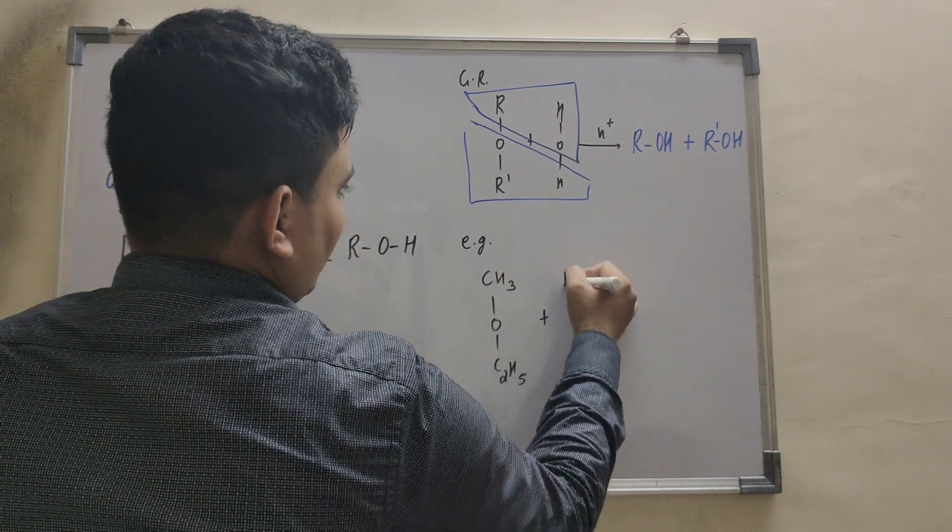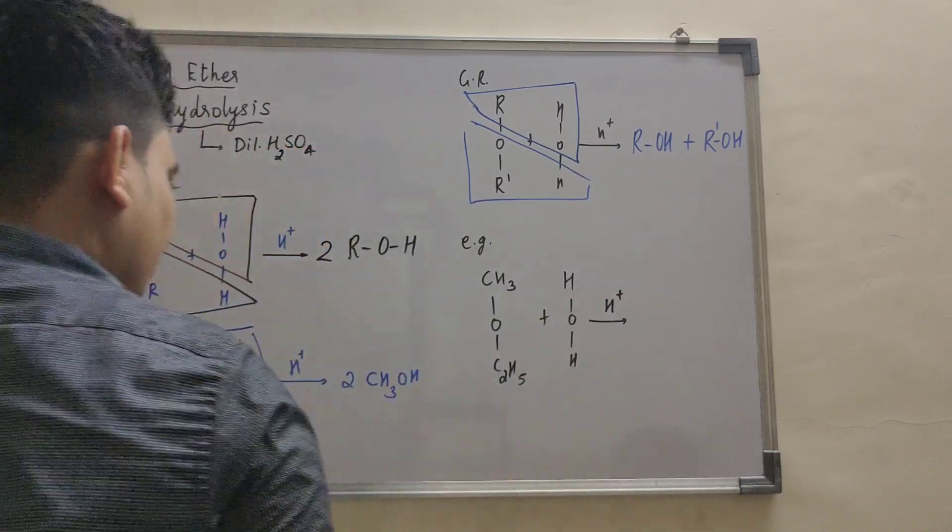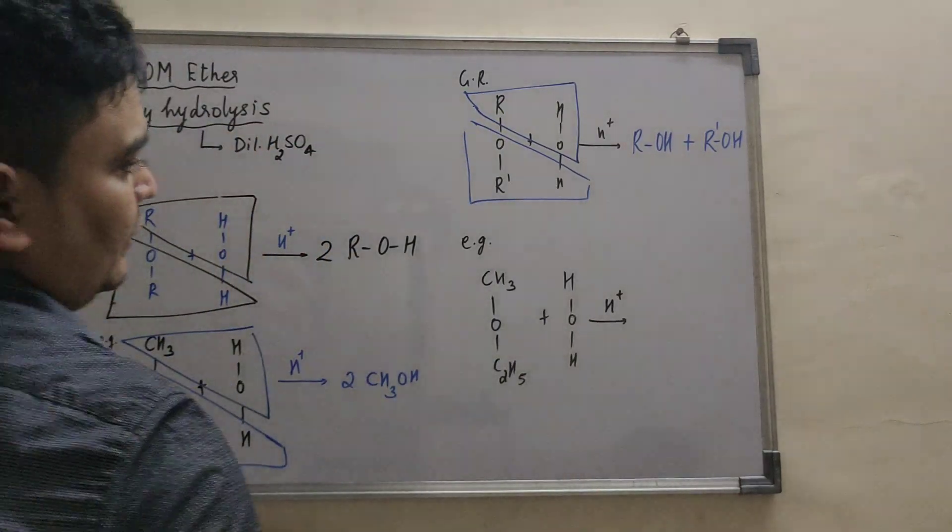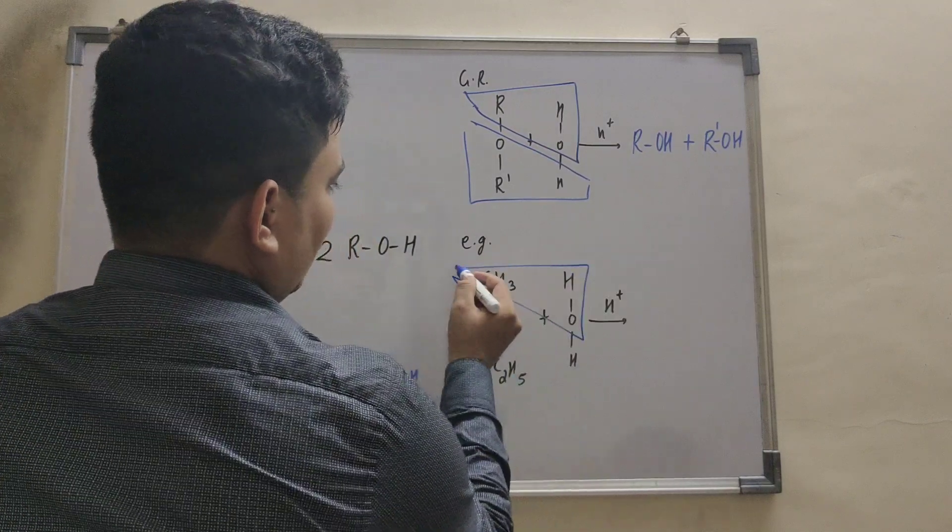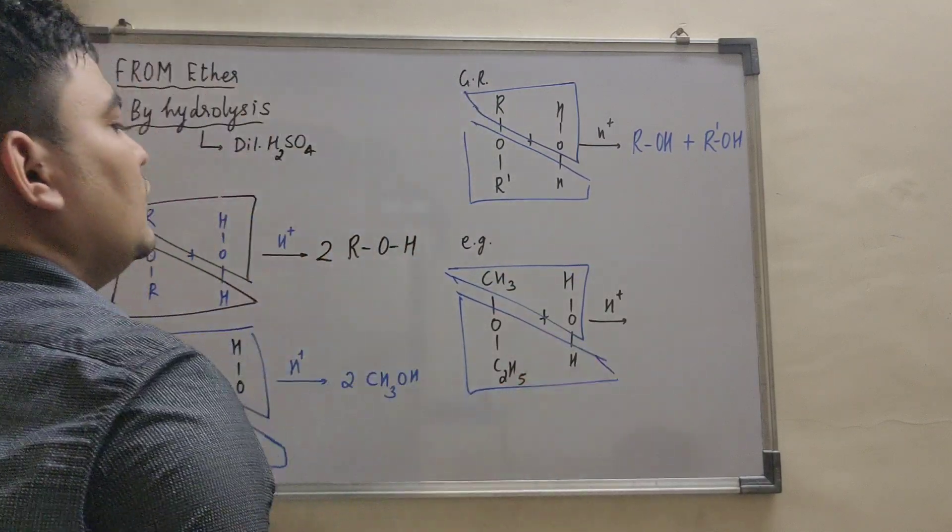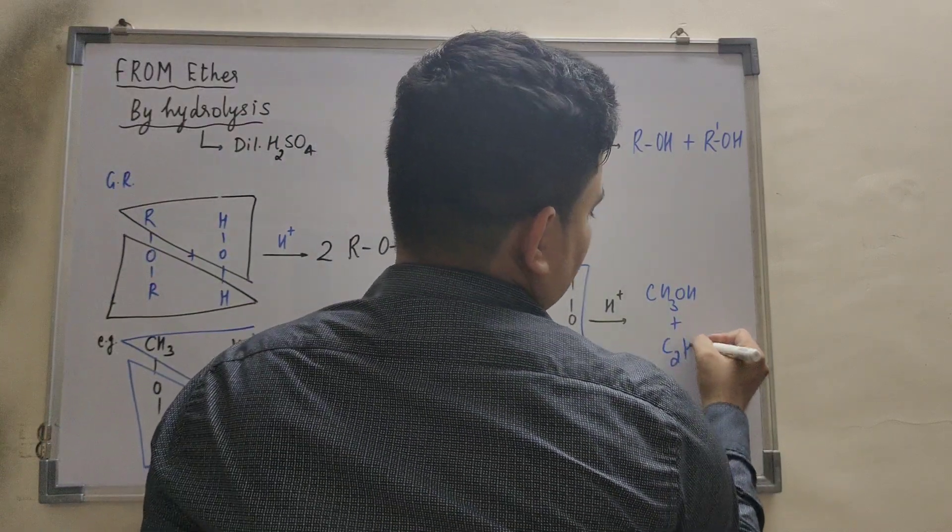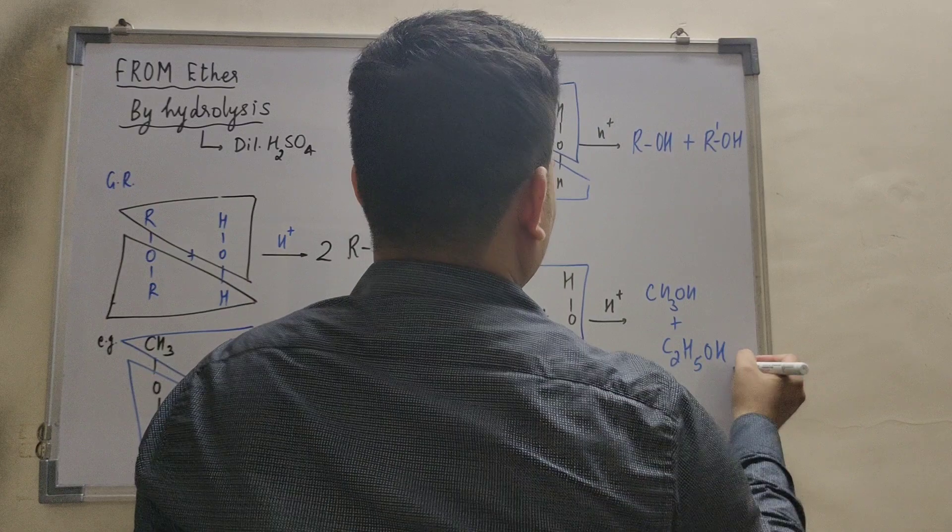CH3-O-C2H5 plus water. You are adding water. Acidic medium. What you will get? Come on, tell me. This will be your methyl alcohol and this will be your ethyl alcohol. CH3OH along with C2H5OH. Clear?